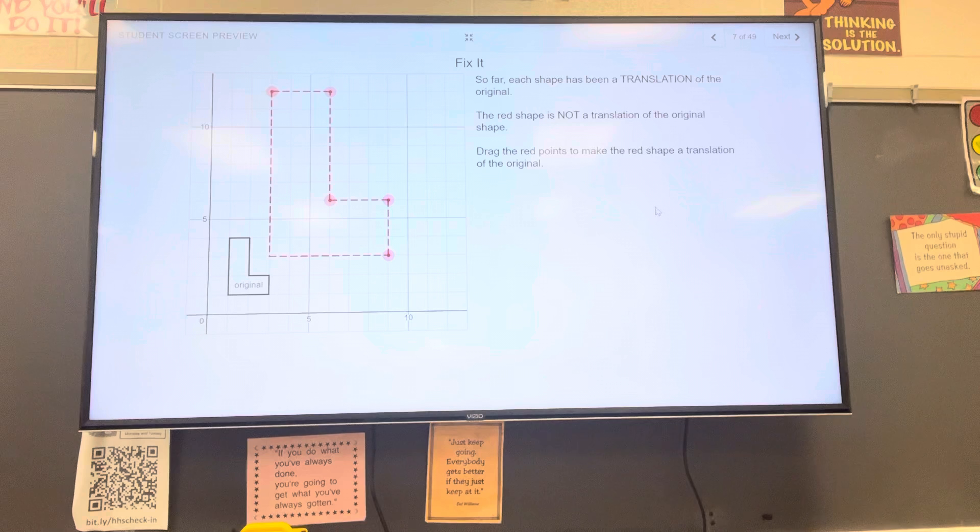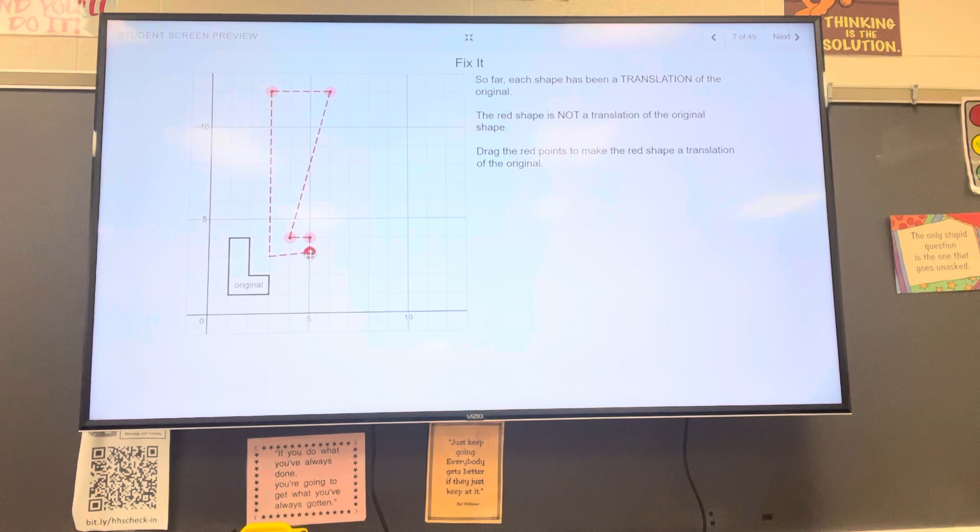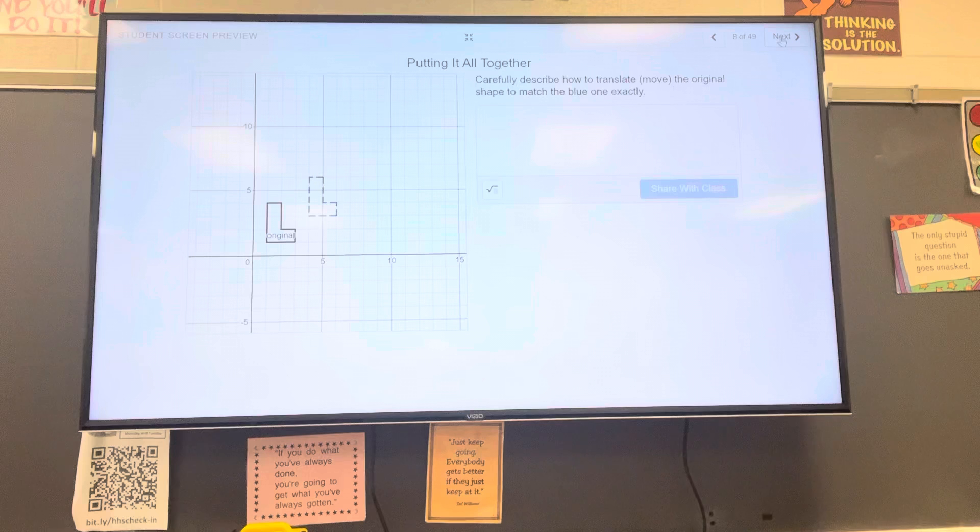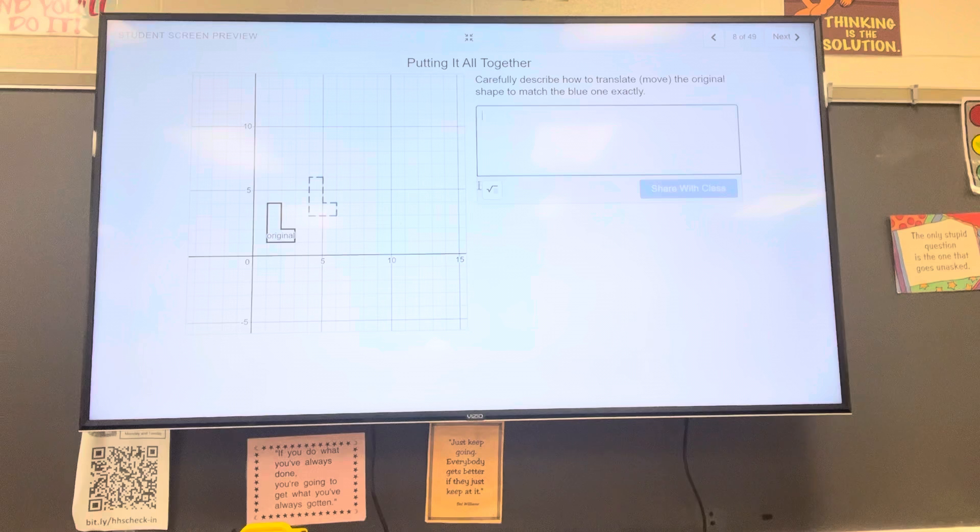So far, each shape has been a translation of the original. The red shape is not a translation. Drag the points to make it a translation. So we're gonna do the best we can here. And really all this requires is counting. I'm doing this quickly, but I know you've taken a little bit more time than me. How's that look? That's good.